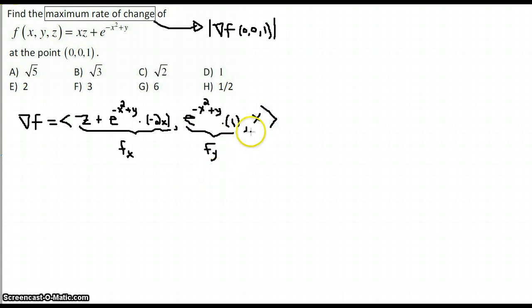Okay, so we need to evaluate this guy at (0,0,1). When x is 0, y is 0, and z is 1.